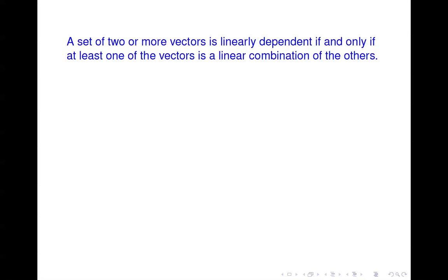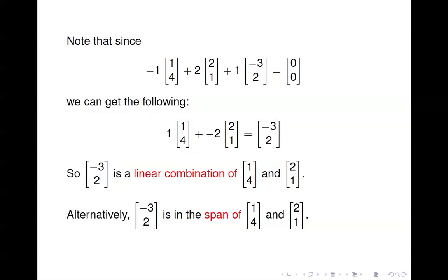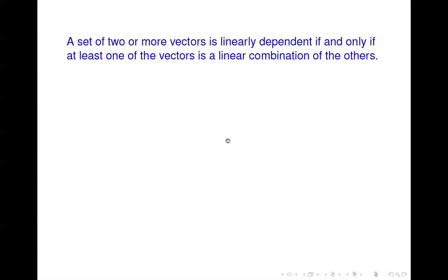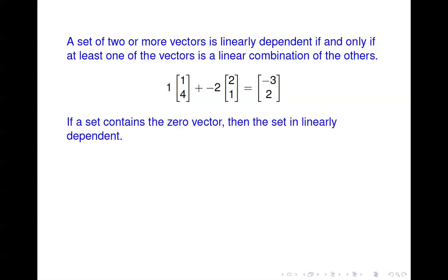Here's another rule relating to linear dependence: a set of two or more vectors is linearly dependent if and only if at least one of the vectors is a linear combination of the others. We saw that (−3, 2) is a linear combination of the other two vectors. In fact, we could have solved the system for any of the three vectors in terms of the other two — any of these vectors is a linear combination of the other two.